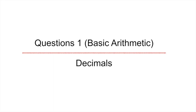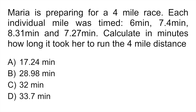Let's start with question one, which is a basic arithmetic question that involves decimals. Maria is preparing for a four-mile race. Each individual mile was timed: 6 minutes, 7.4 minutes, 8.31 minutes, and 7.27 minutes.